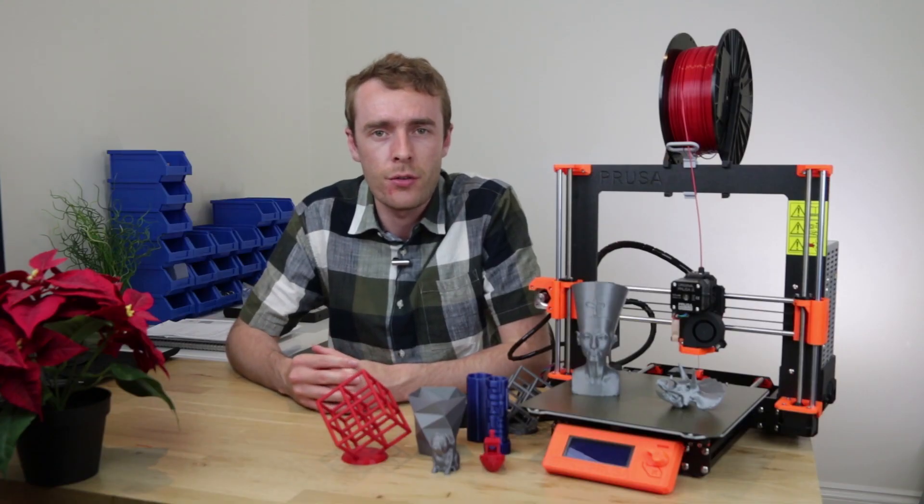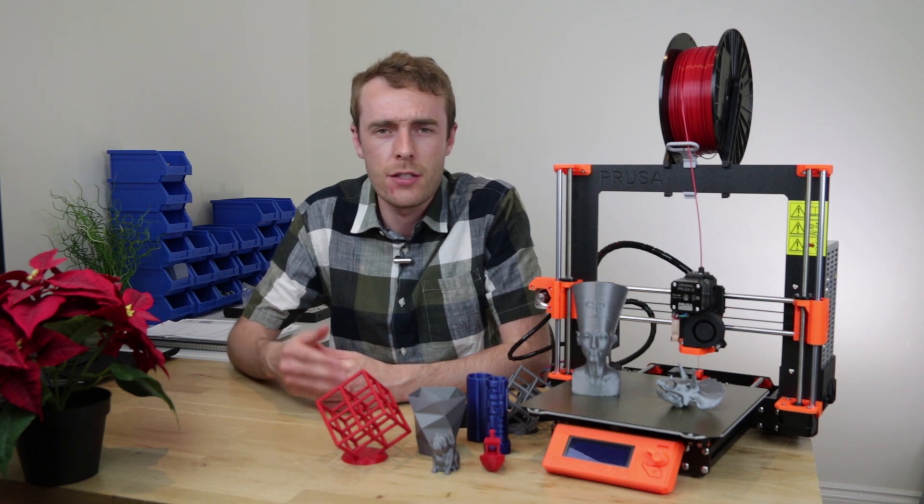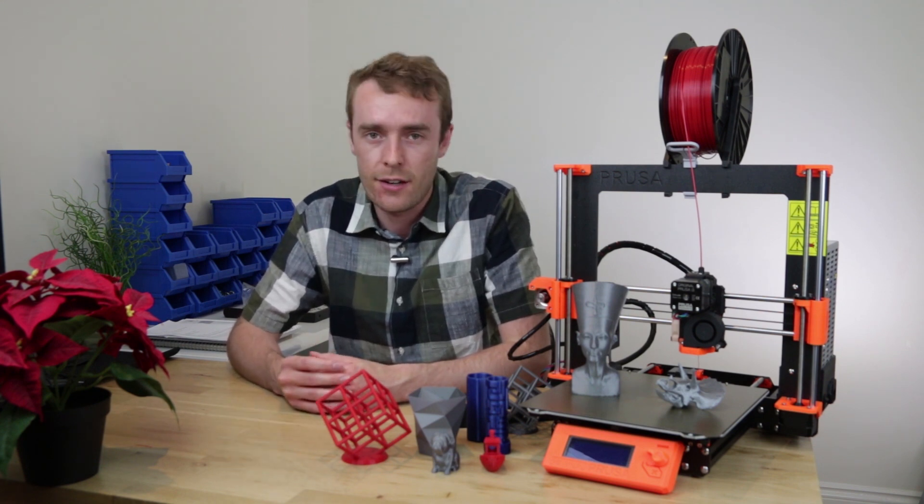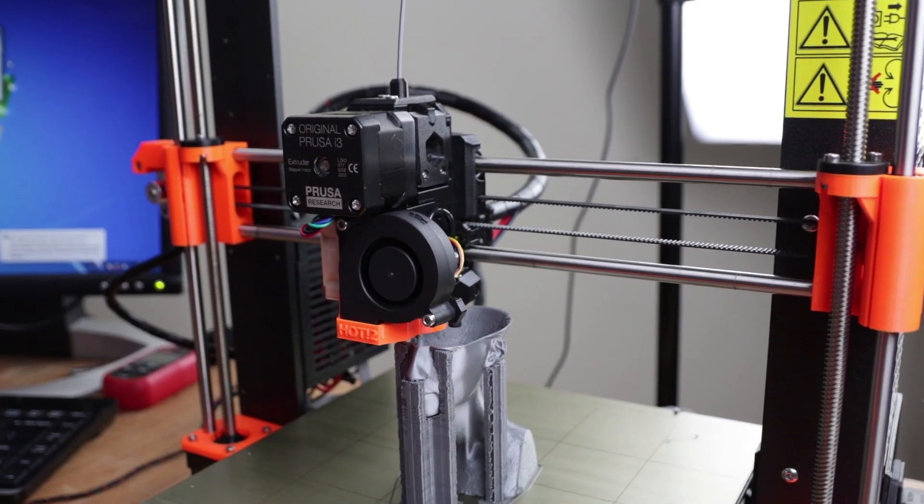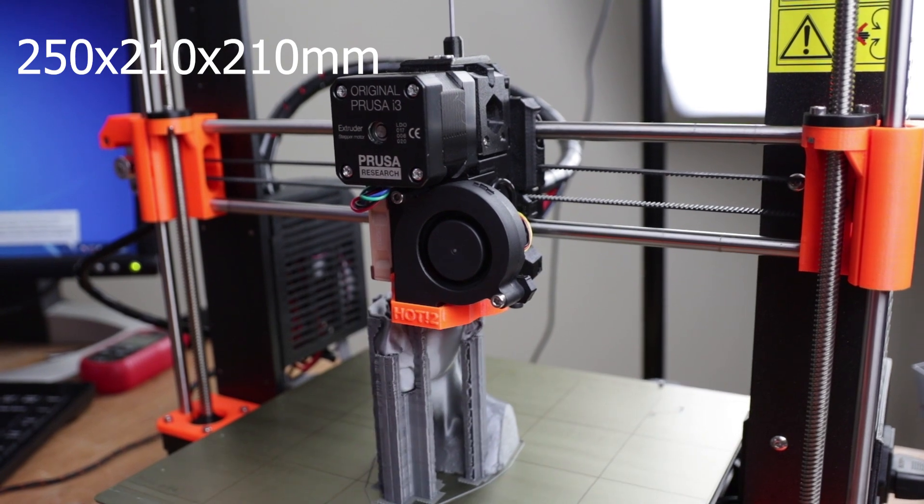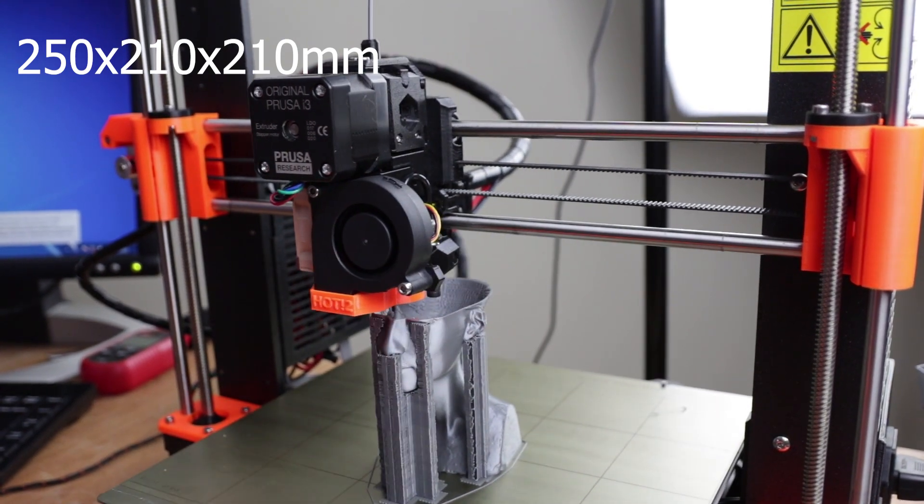So what is the Prusa i3 MK3? Which I will now refer to as the MK3 throughout the rest of the video to prevent me having to say i3 MK3 again and again. The MK3 is an FDM printer with a build volume of 250x210x210 for a total of 11,025 cubic centimeters.